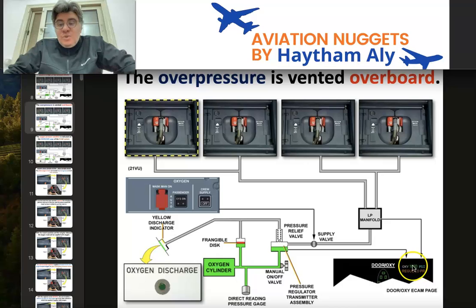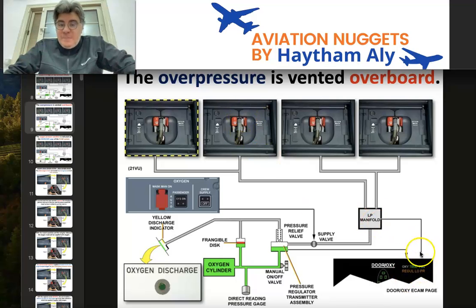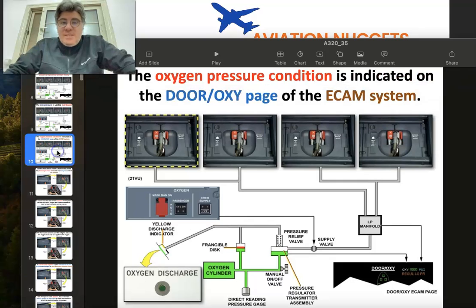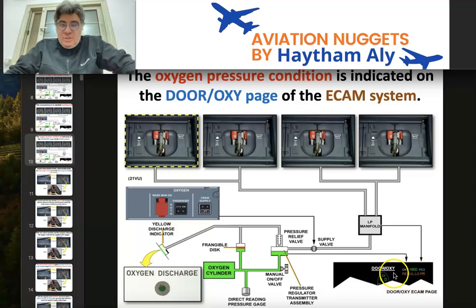The pressure regulator transmitter assembly sends the cylinder pressure to the ECAM door/oxy page, which provides an indication for the dispatch condition. The minimum dispatch pressure for the oxygen cylinder depends on the number of cockpit crew flying the aircraft — whether it is two, three, or four crew members. The oxygen pressure condition and minimum dispatch pressure is monitored from the upper ECAM door/oxy page.